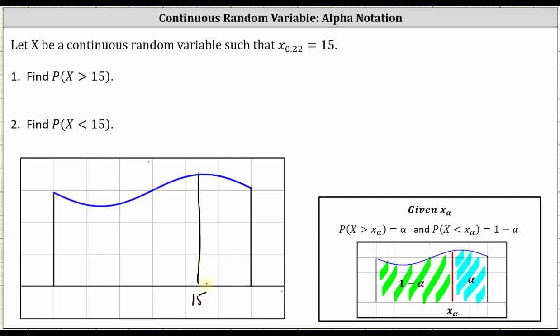then the area to the right of 15 under the probability density function is equal to 0.22,